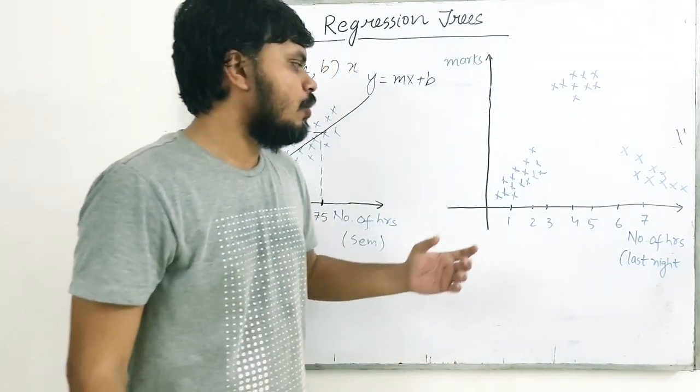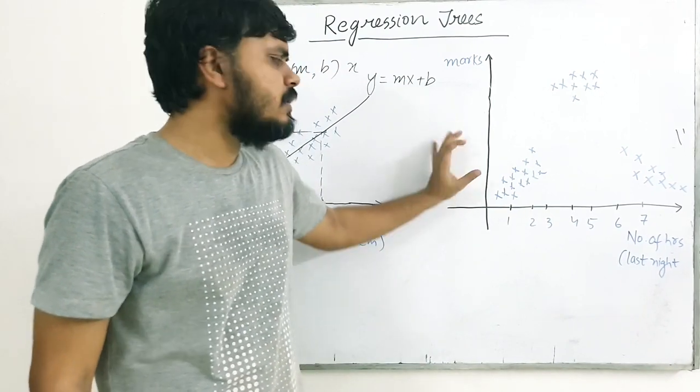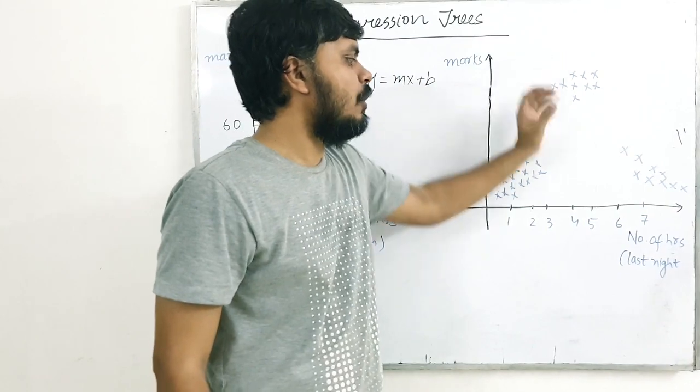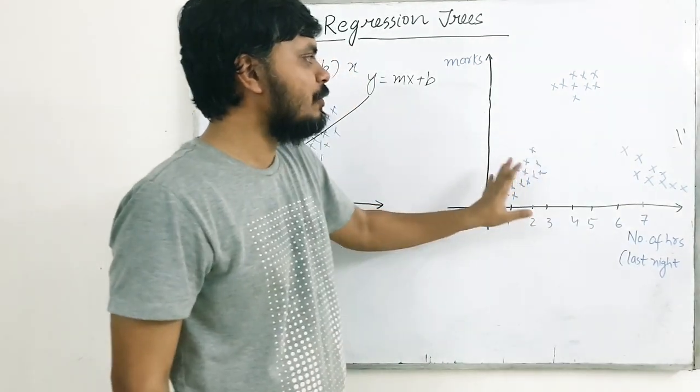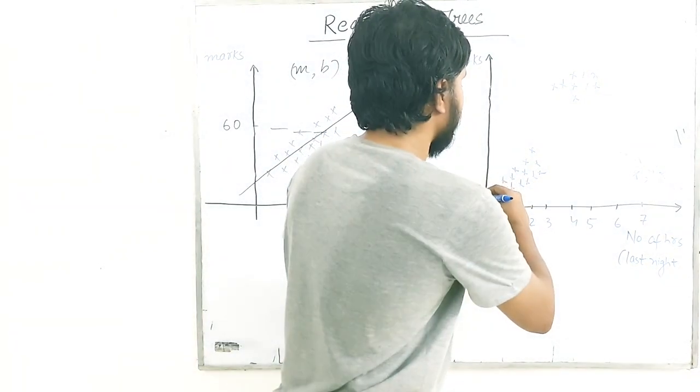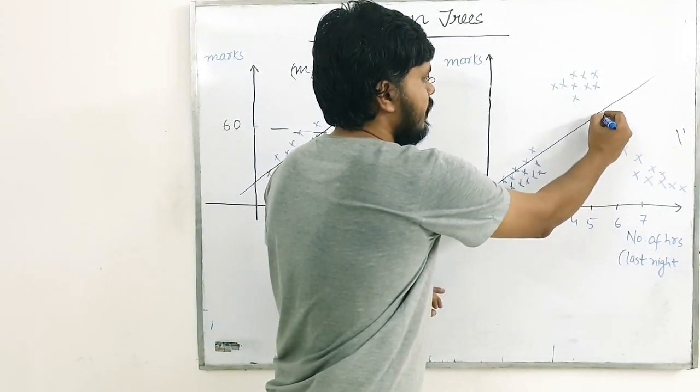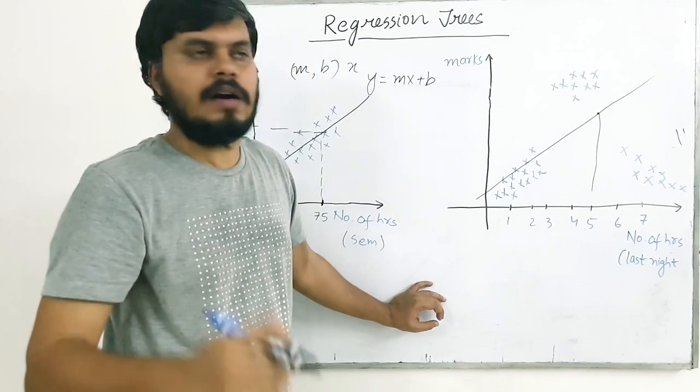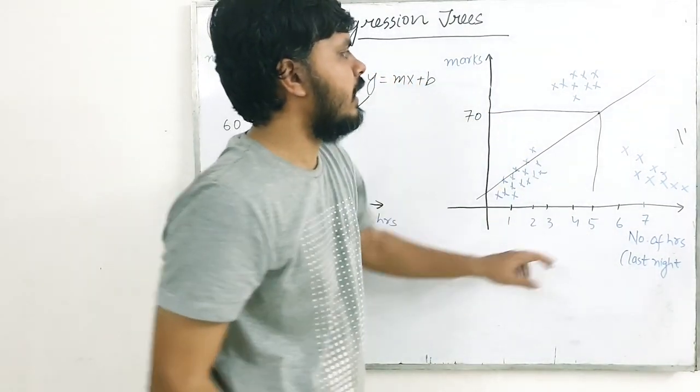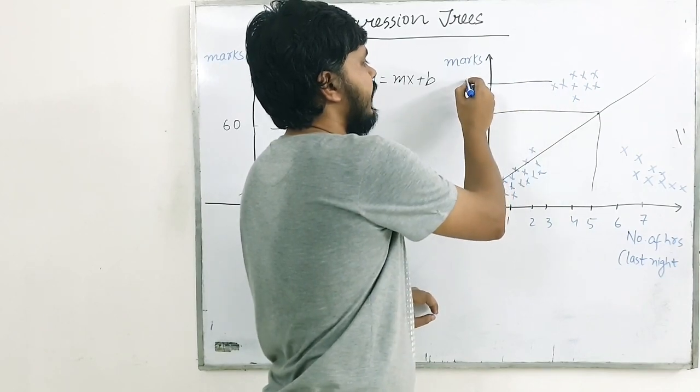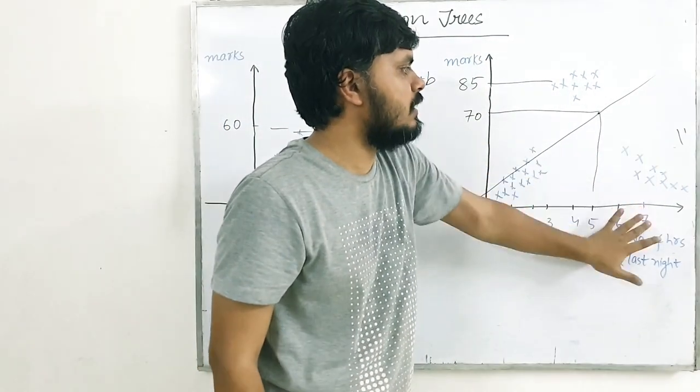And now you can totally imagine, ki jinn logon ne bahut kam padhai kiya, like 3 ghante padhai kiya exam ke pehle, unka marks thoda kam aaya. Jinn logon ne optimum range mein padhai kiya, 3 to 6, unka marks zyada aaya. Jinn logon ne bahut zyada padhai kiya, like 6 ghante se zyada, woh exam pehle stress hai. Toh unka marks kusse kam hai, okay? So now, agar tum yahan pe koi aisa line draw karne ka try karo, samajh mein aaya?